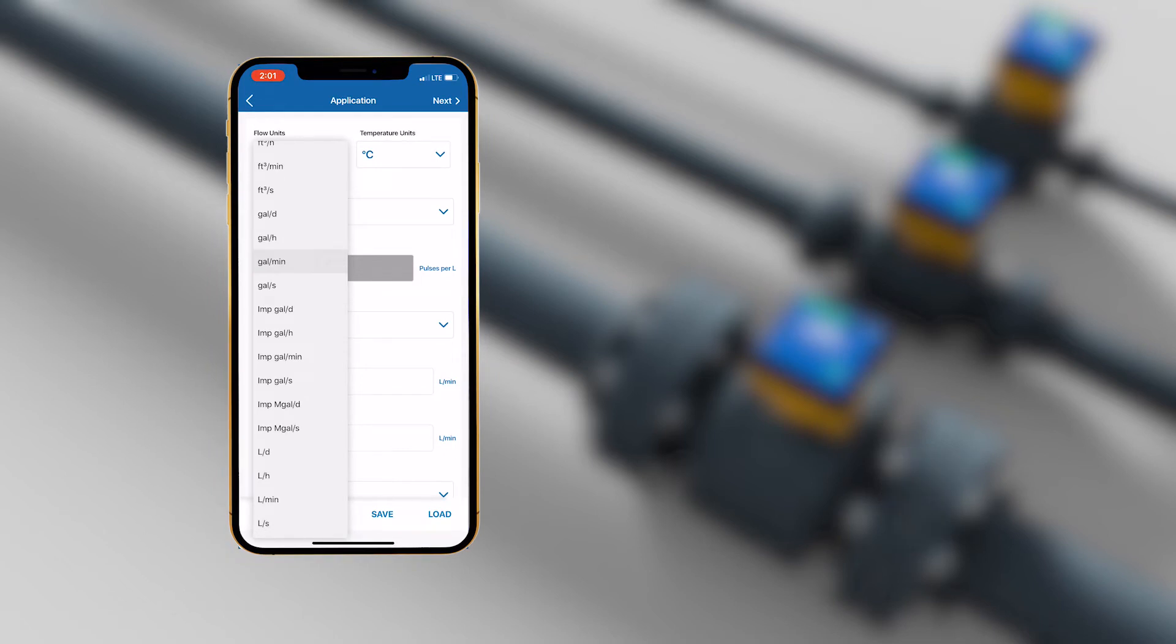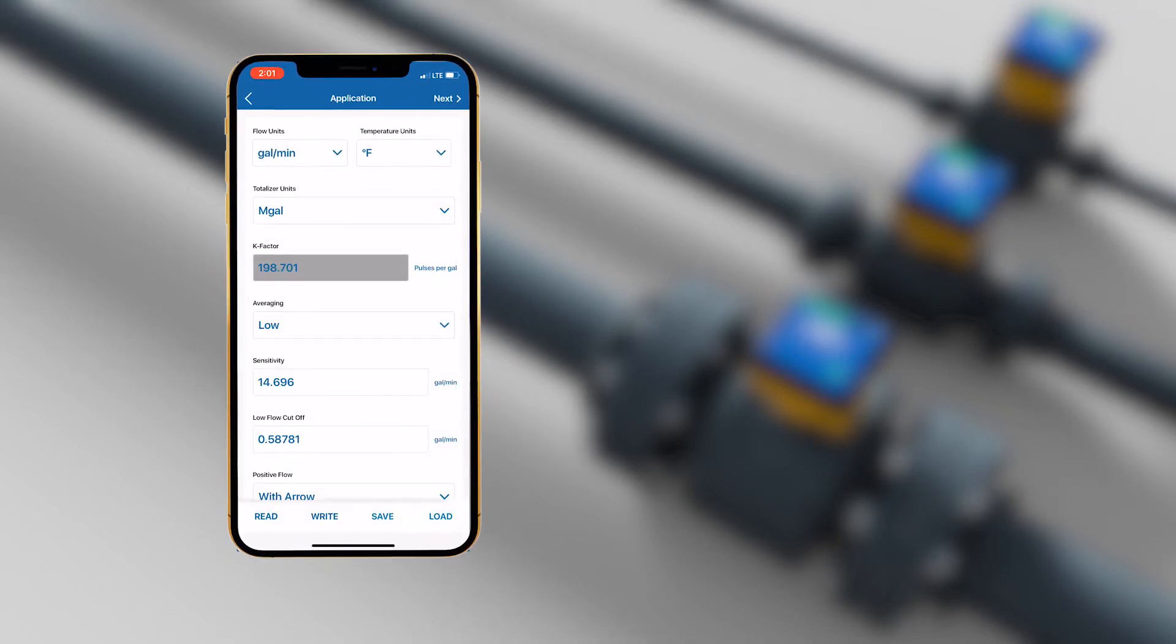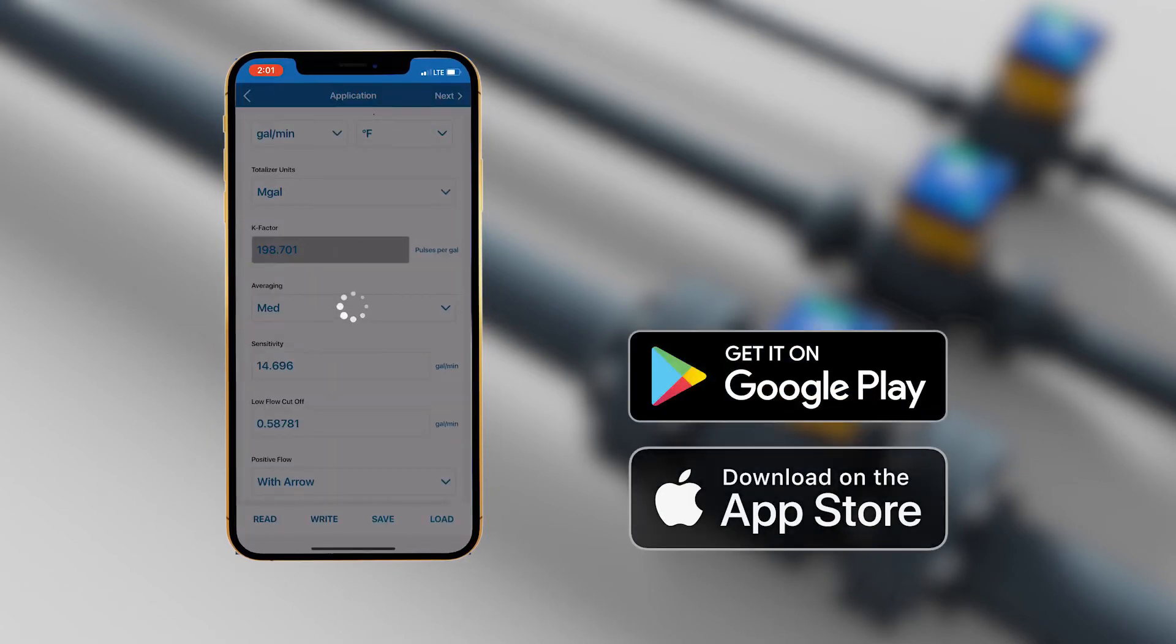After customizing parameters for averaging, low flow cutoff, span the 4 to 20 milliamp output, users can then monitor the 2580 on their Android or iOS device.